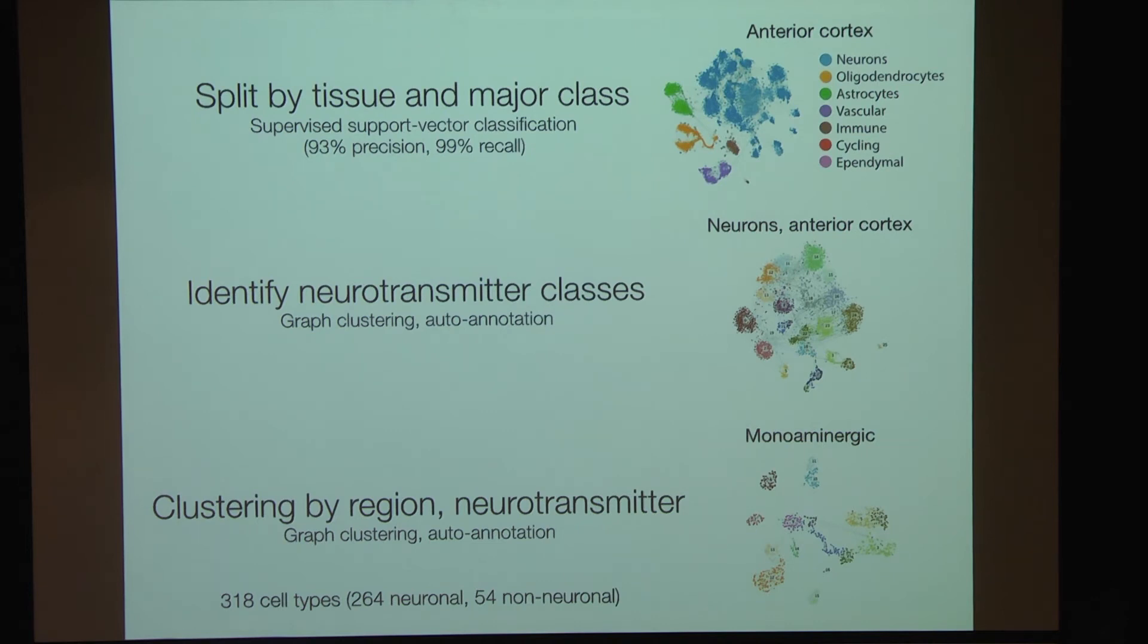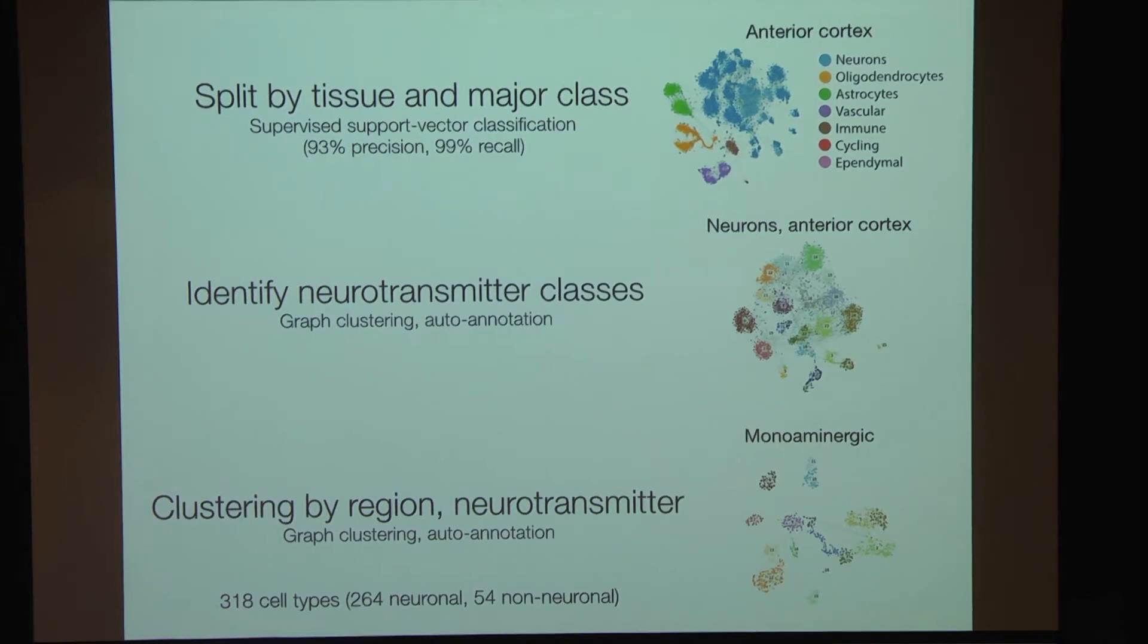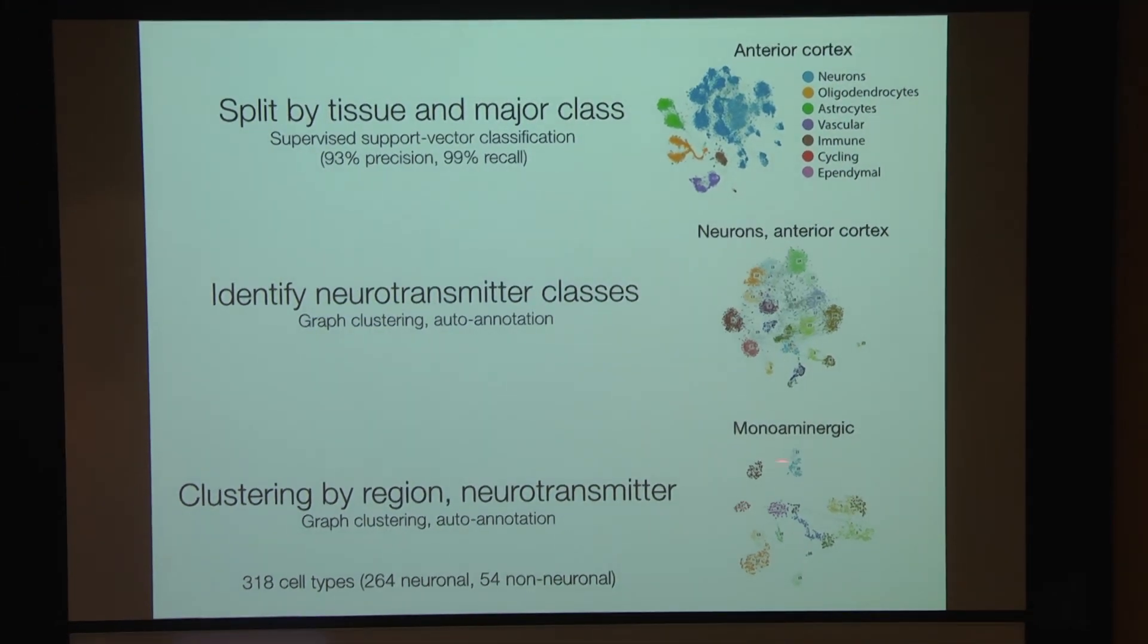So we have generated this dataset in the mouse and we have spent a lot of time developing the methods to cluster this. I'm not going to go through this in detail, just want to point out that in the end, we can find pretty distinct clusters of cells that represent specific neuronal types in specific parts of the brain that use specific neurotransmitters. This is the collection of monoaminergic cell types in the mouse brain. In total, right now, we have 300 of the cell types.